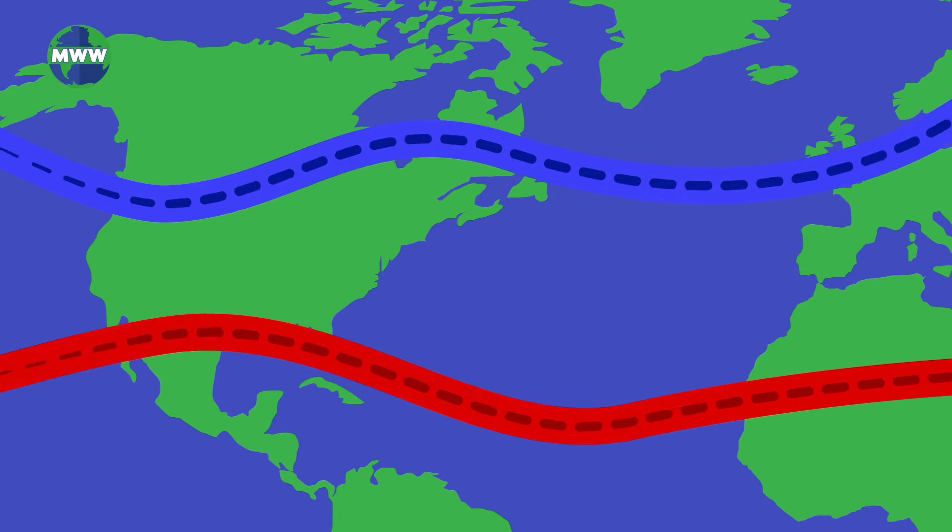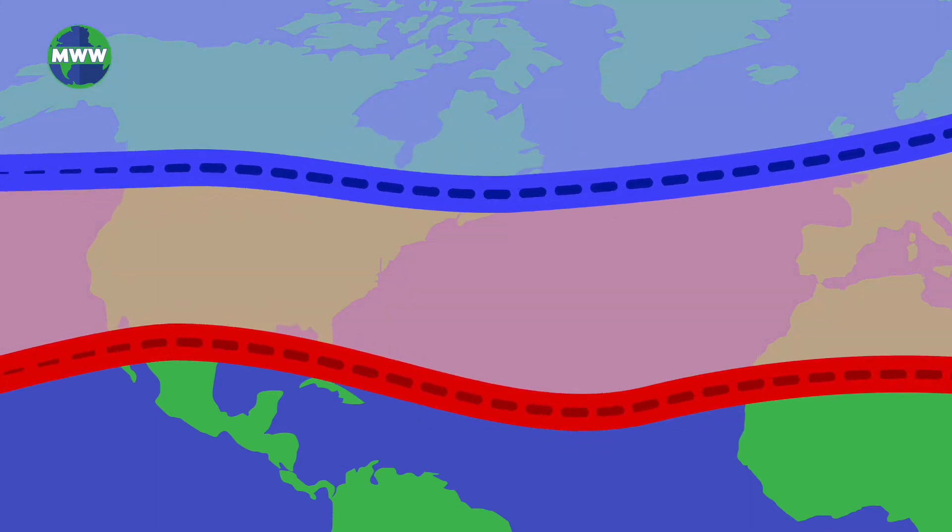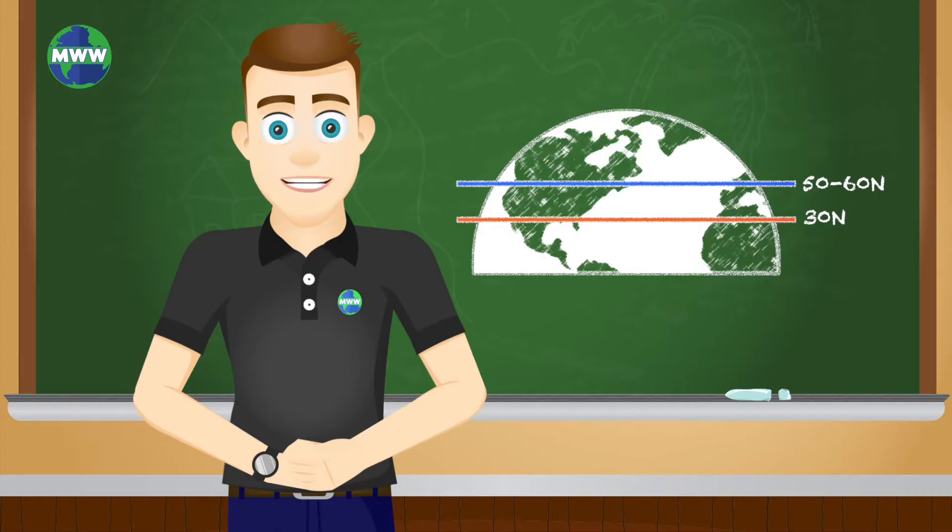The flow shifts north or south following the boundary between hot and cold air. The biggest change in temperature is around 30 degrees and 50 to 60 degrees north or south latitude.